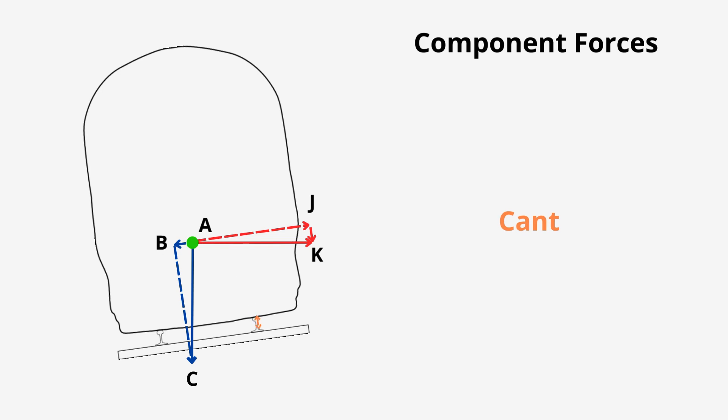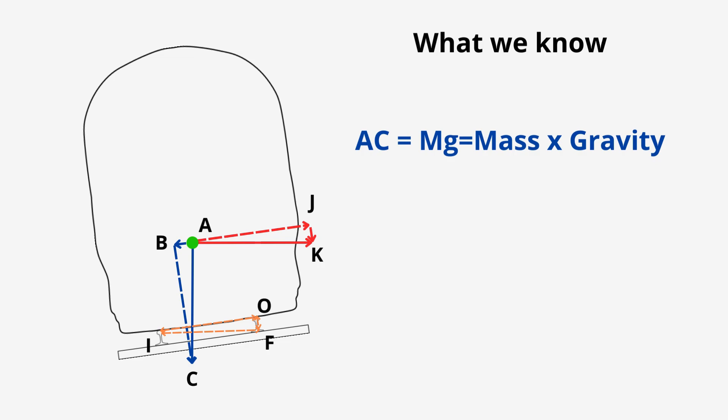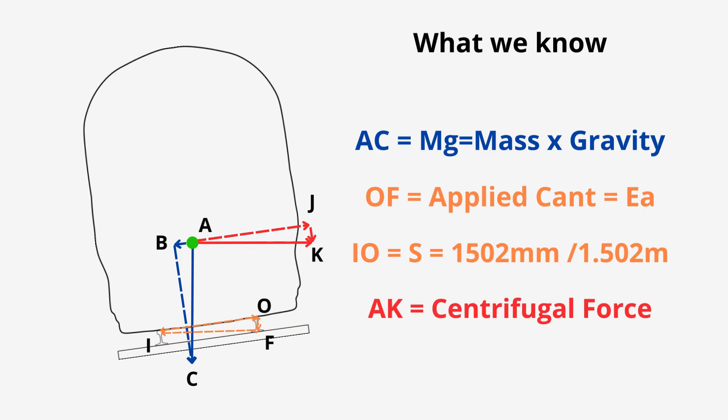So, what else do we know and is important in this diagram? Well, the cant is important. So, let's put that on there. We also know the distance between the centre lines of the rails, commonly referred to as S in equations. Let's complete that triangle too and label up the corners I, O and F. Now, let's list out what we already know on the side here. AC is MG, which is mass times gravity. OF is the applied cant. Let's call this EA. IO, the distance between the centre lines of the rails, S, which is 1502 millimeters or 1.502 meters when we have a 1432 millimeter track gauge. AK is our centrifugal force.